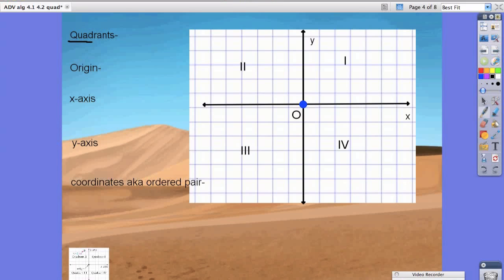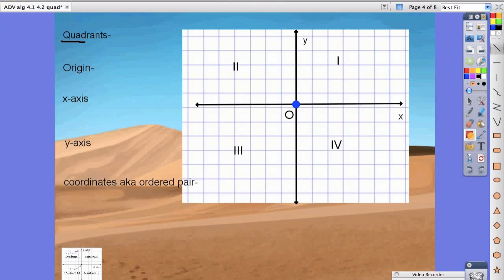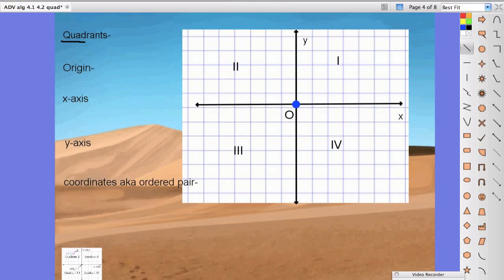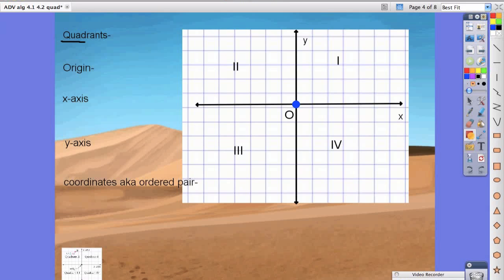Our x-axis is this line that goes horizontally left and right. So that's this line in red. This is our x-axis. Our y-axis, which we will do in green, is our vertical line or the line that goes up and down. So x-axis in red, y-axis in yellow.